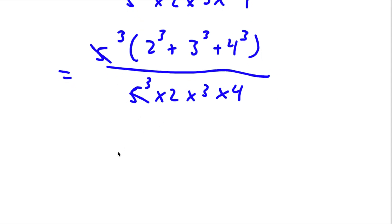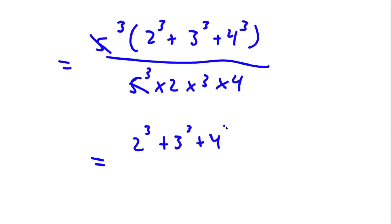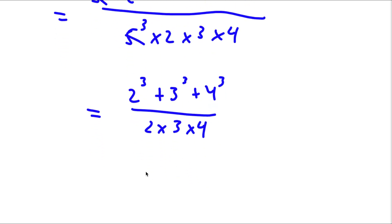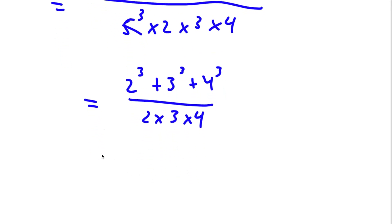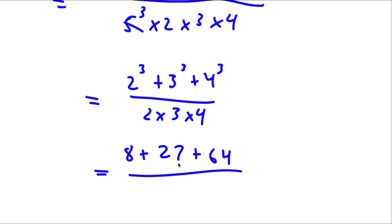Now the two 5³ terms cancel out, so I'm simply left with (2³ + 3³ + 4³) over (2 times 3 times 4). Now 2³ is 8, plus 3³ is 27, plus 4³ is 64, over 2 times 3.